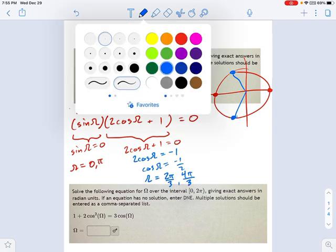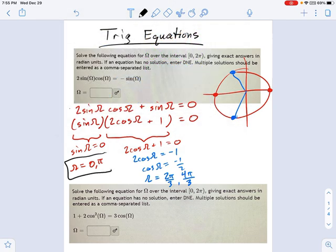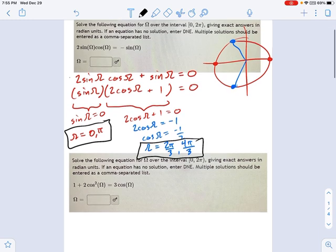So this is your full list of answers. It's all of them. It's zero and pi and two pi over three and four pi over three. You would just enter those all as a list of values. It doesn't matter what order you do them in. It doesn't matter if they're simplified fractions or not. Just get the angles right. Don't use any decimals.